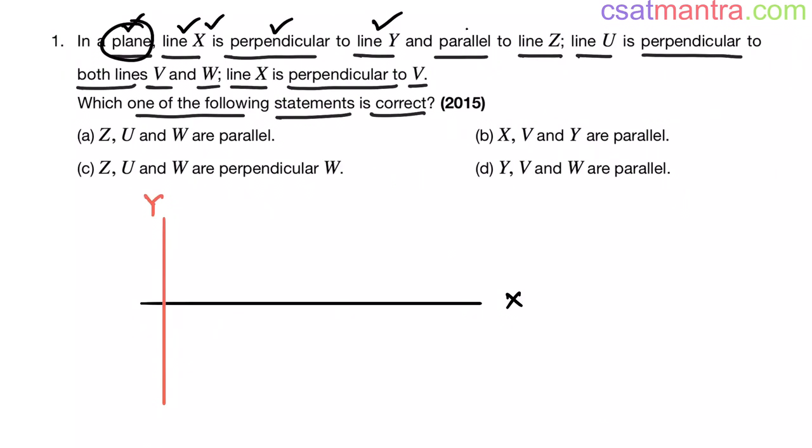Line x is parallel to line z. Let us draw line z which is parallel to line x. This is line z which is parallel to line x.